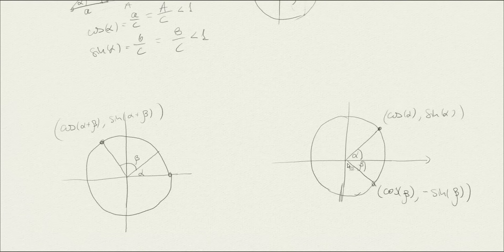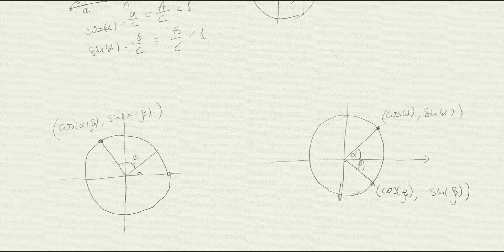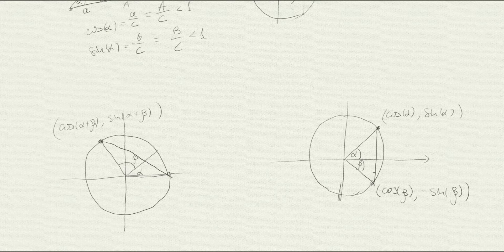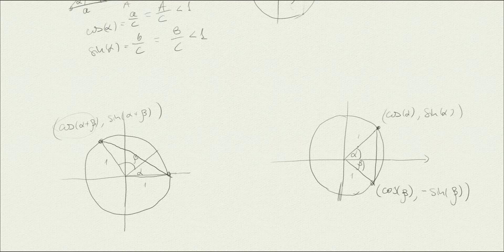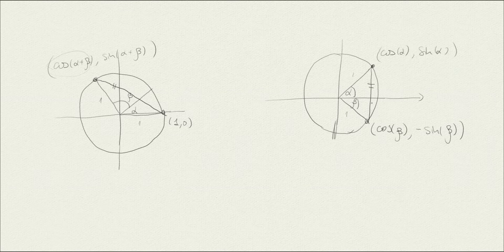The key invariant to remember in order to derive all the trigonometric identities is that the two triangles formed are essentially isometric — there is a rigid motion of the plane mapping one onto the other because they share two equal sides and the same angle. Therefore this point is (0, 1), and the sides are equal. We equate the distance formula for the two triangles to derive the identities.